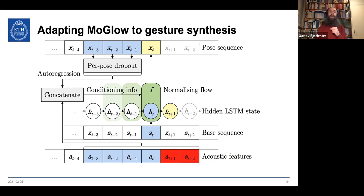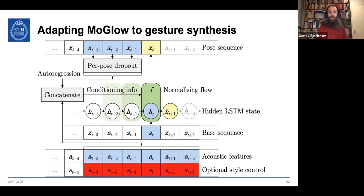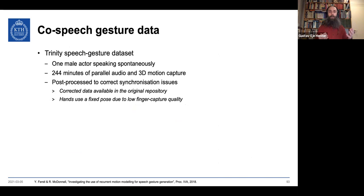Communicative intent precedes speech and gesture in time, and gesture requires planning — you need to prepare the stroke. Since we only have concurrent speech, we feed in one second of future speech as a look-ahead so the system knows when to raise hands and synchronize. To adapt the MoGlow architecture for co-speech gesture generation: change the control input to acoustic features from speech, include future context, and optionally add style control numbers to the input vectors.